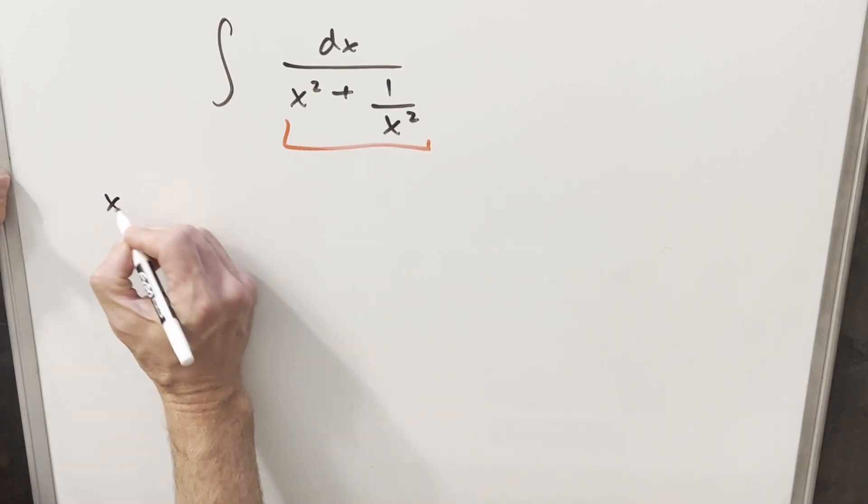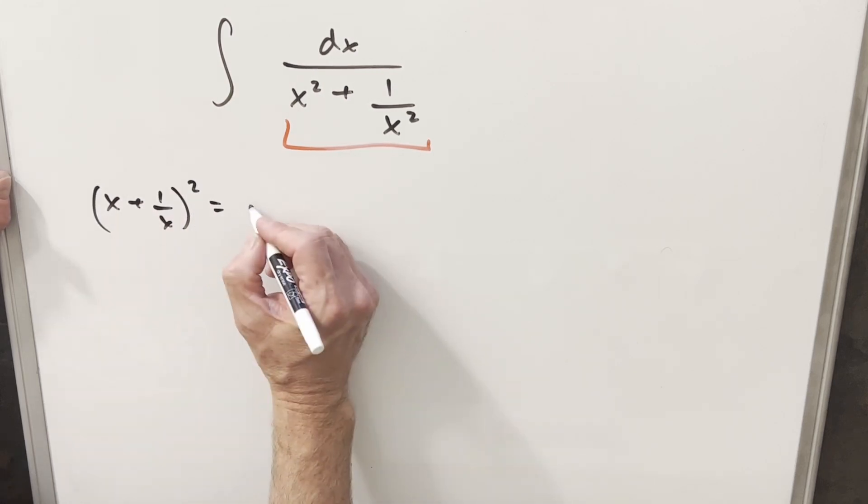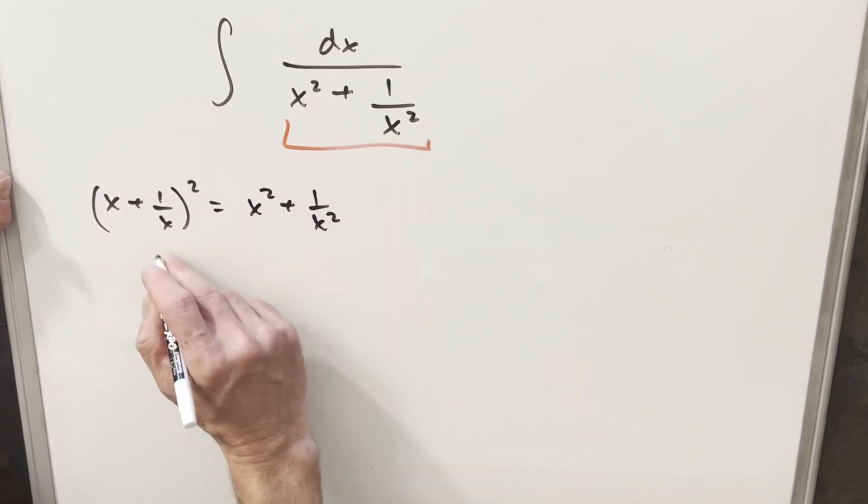What I can notice about this is if I take x plus 1 over x and square it, multiplying that out, we get x squared plus 1 over x squared, which is this, but then we have a plus 2.